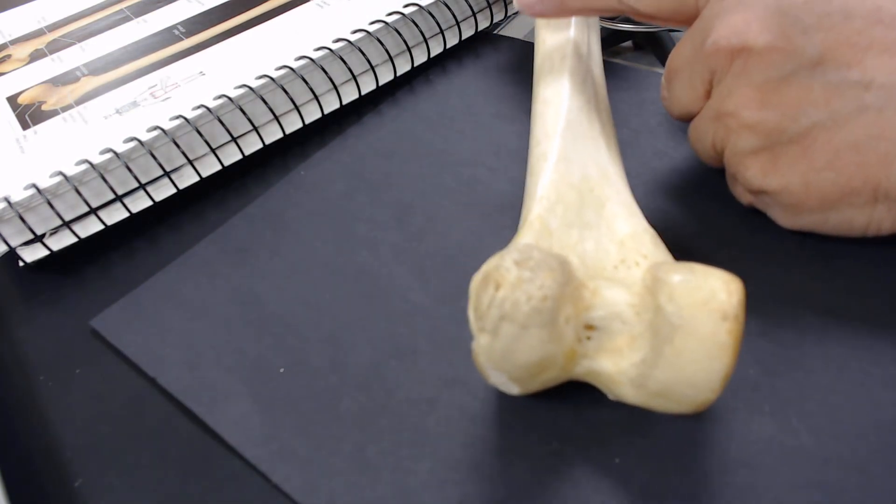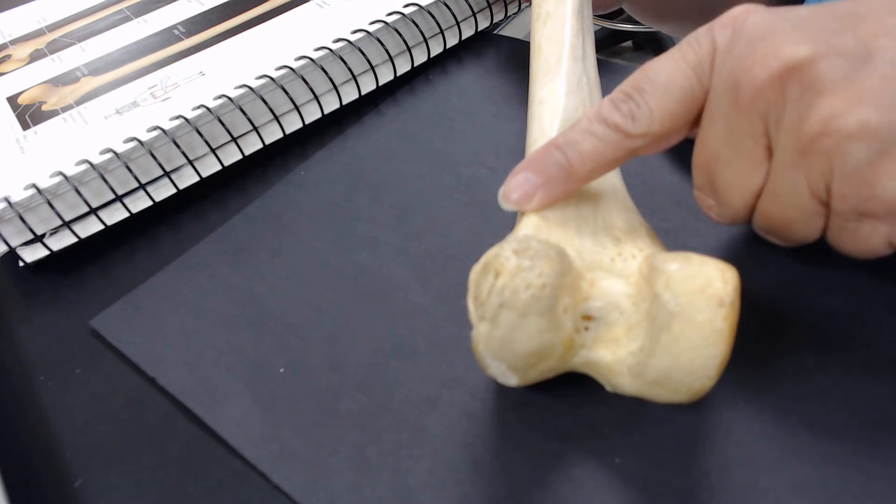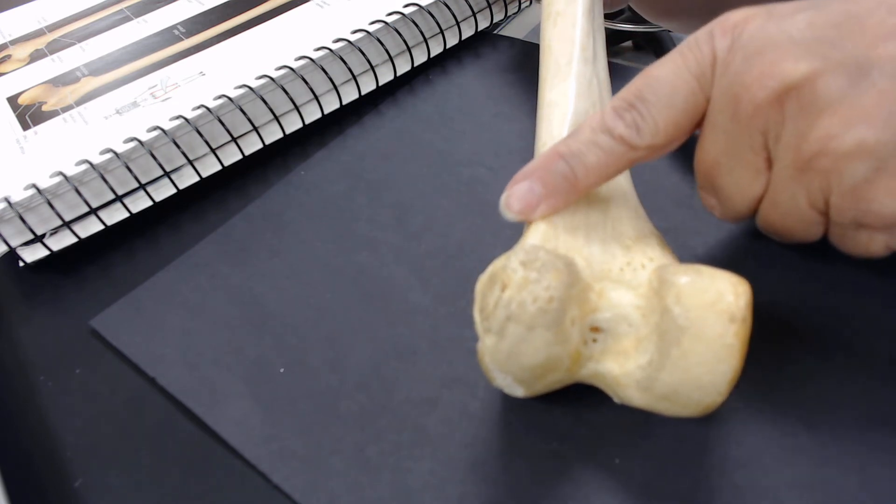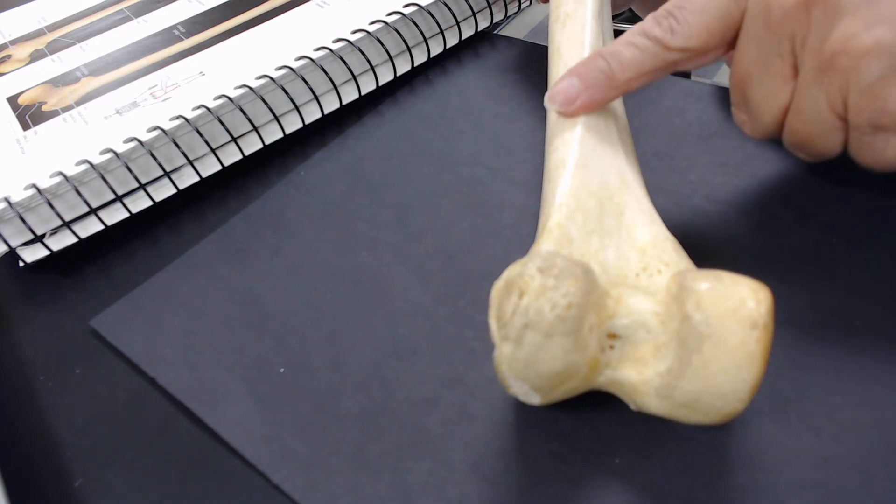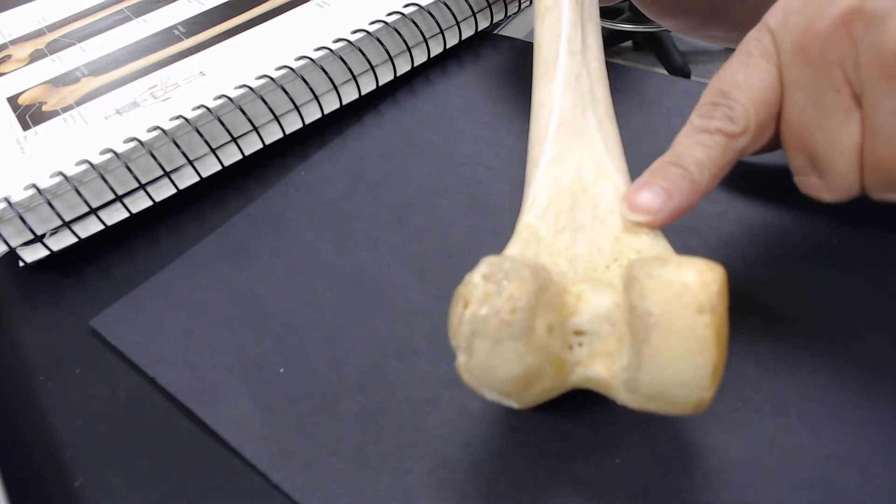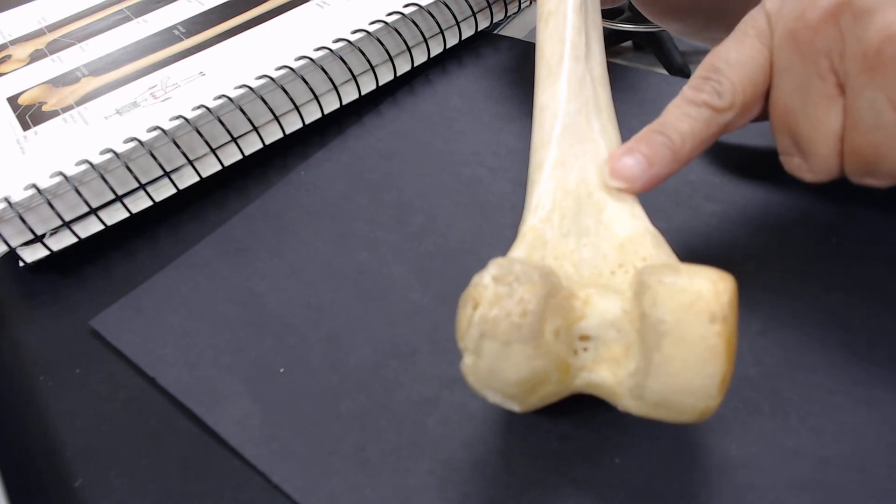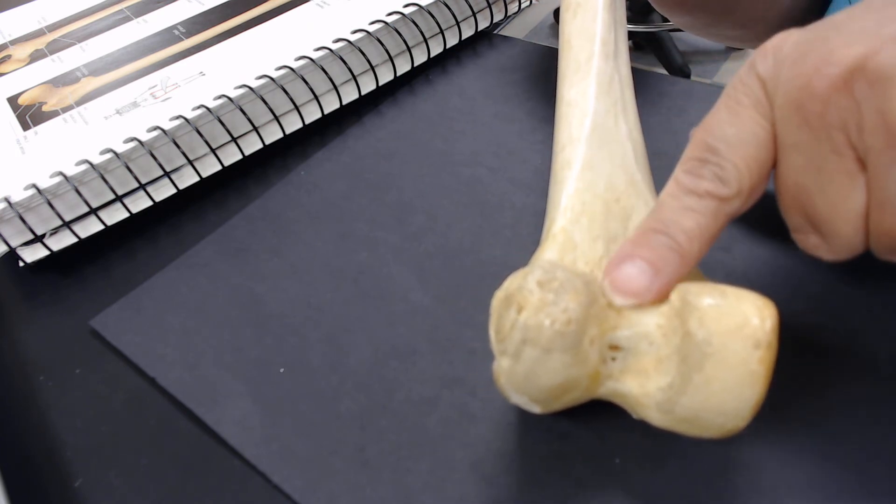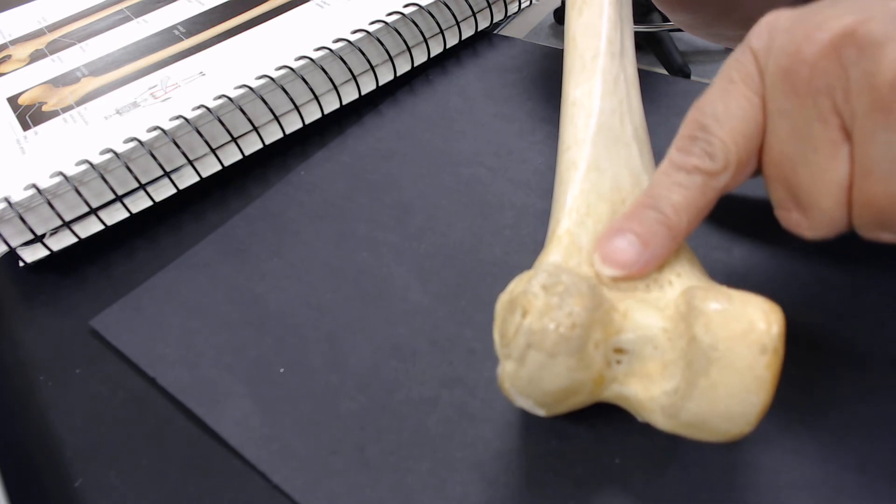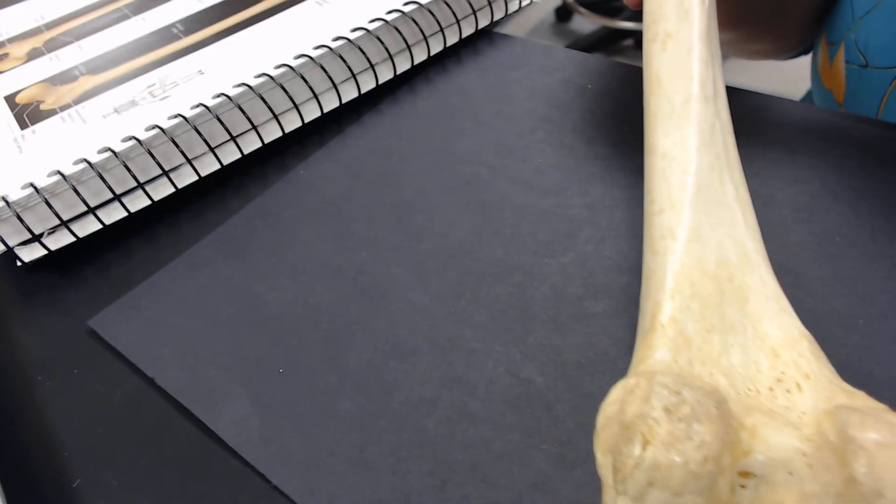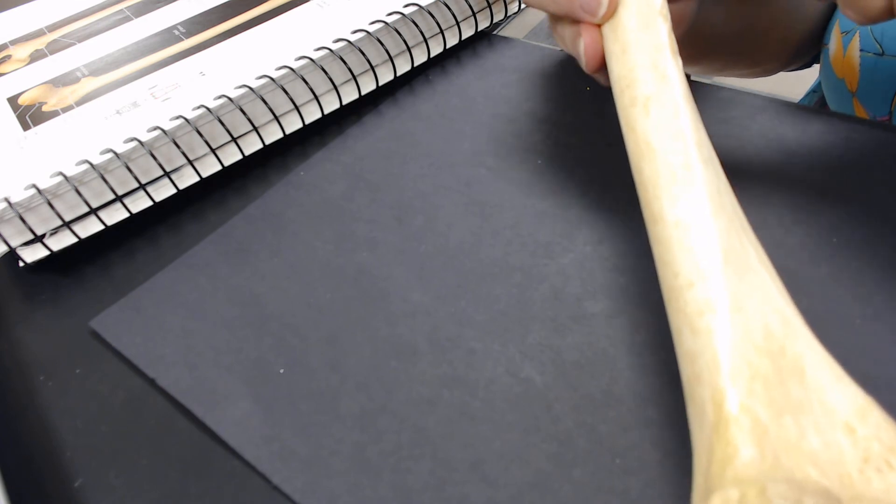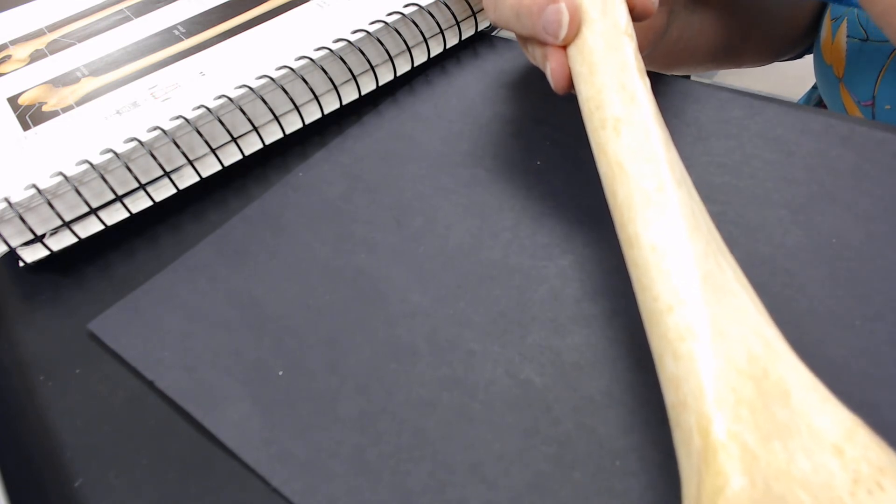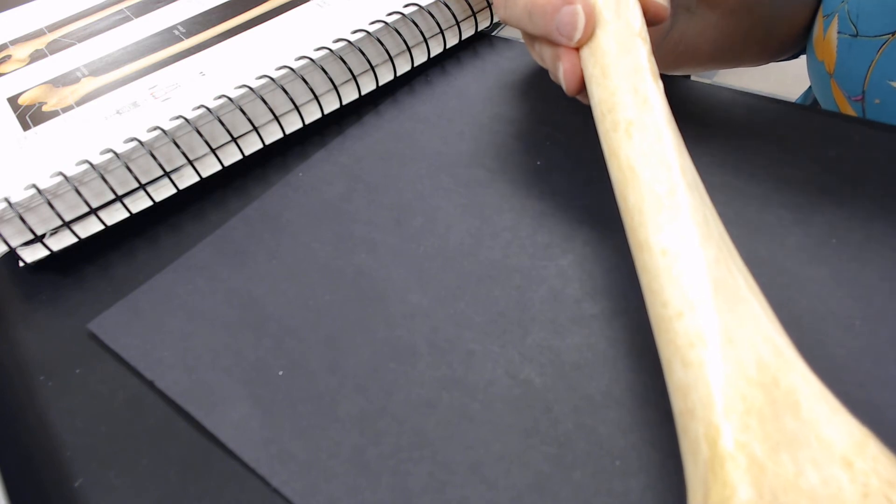We have the lateral supracondyle ridge, medial supracondylar ridge, popliteal surface. This is the back side of the knee. Linea aspera. We have the pectineal line, and we have the gluteal tuberosity.